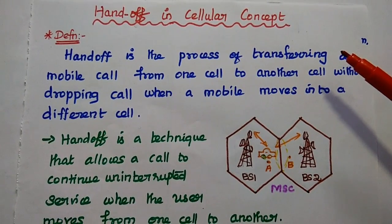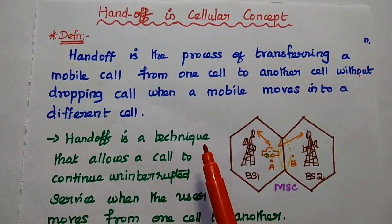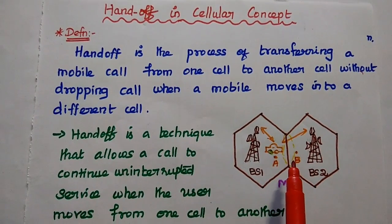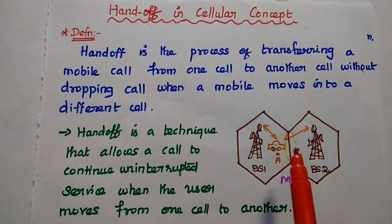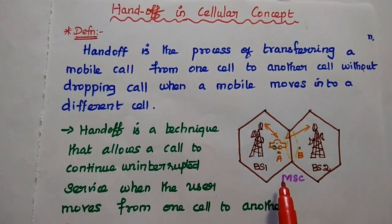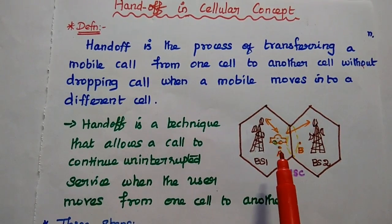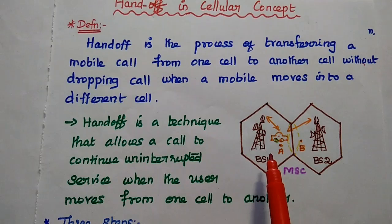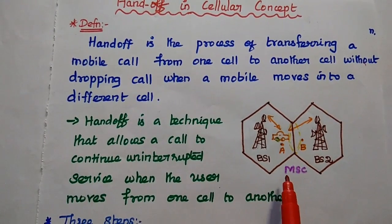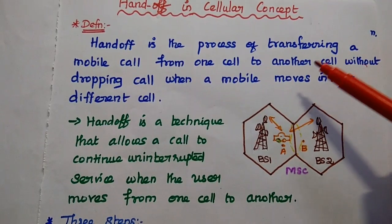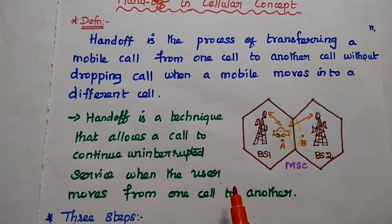We are going to discuss handoff strategies in cellular concept and its practical considerations. When a mobile user is moving from one cell to another cell while a call is in progress, the technique called handoff is used to transfer the mobile call from one cell to another without dropping the call. In a cellular network, each cell has its own base station which controls all the channels within the coverage area.